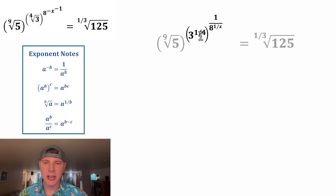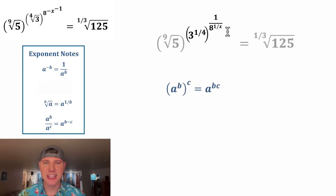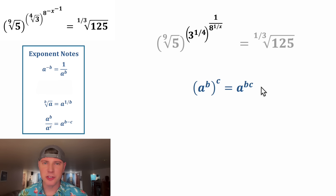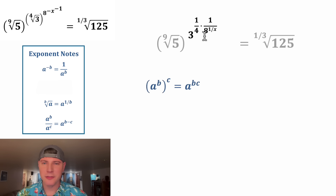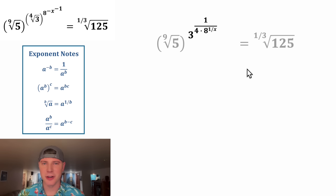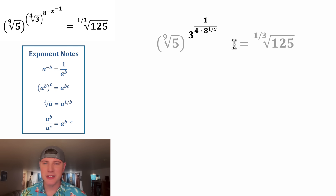Now we have something to an exponent, whole thing to an exponent. In this case, you end up multiplying the two exponents, so we're going to multiply this one-fourth times all of this. After we multiply, we can make them a single fraction: three to the power of one over the quantity four times eight to the power of one over x.